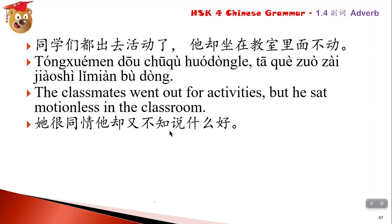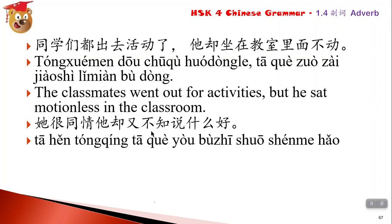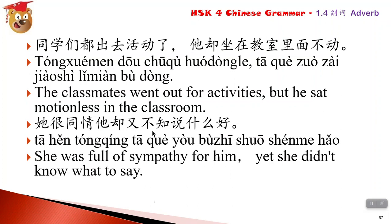Another example of 却: 他很同情，他却又不知说什么好 - she felt sympathy for him, but yet didn't know what to say. 同情 means sympathy. She was full of sympathy for him, but did not know what to say.